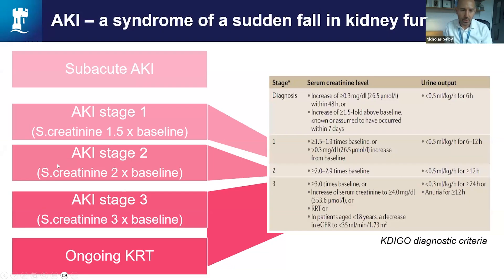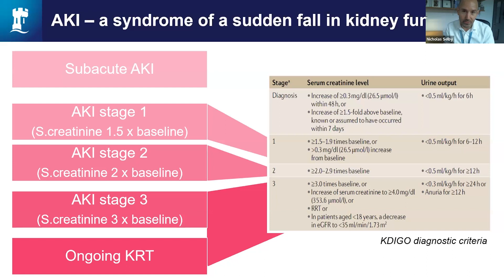AKI is a syndrome characterised by a sudden reduction in kidney function. It's defined according to internationally accepted criteria, as shown here on this slide. The KDIGO criteria describe three different stages of AKI in increasing severity based on the magnitude of change in an individual's serum creatinine from their baseline value, or less commonly in clinical practice, the degree of oliguria they're experiencing.